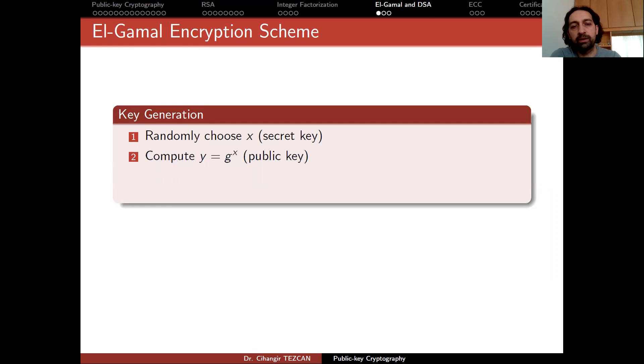If you use elliptic curve cryptography, this would be an operation on the group operation. And in elliptic curves, we have different operation for addition. You compute this. You randomly choose X and using the group operation, you take G to the X and compute Y.